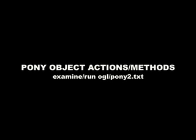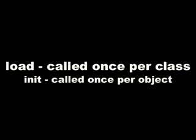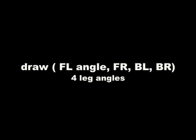We only need one of each pair of legs. We're going to get display list IDs for the pony, the front leg, and the back leg — two of them for the sides and the wrapper. The pony object actions or methods are going to be: load, which is called once per class to initialize it; init, which is called once per object to initialize that object; and then draw, which takes a front left angle, a front right angle, a back left angle, and a back right angle.